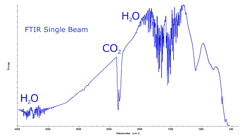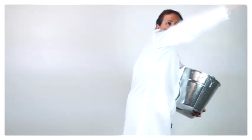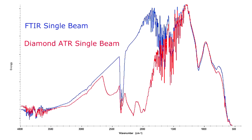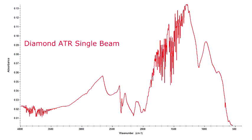We will now layer the background spectrum of a clean and dry diamond crystal from Pike's multipurpose Miracle ATR, the accessory used in this example. In addition to the atmospheric features, we also observe the characteristic absorbance from the diamond phonon bands found with all diamond ATRs.